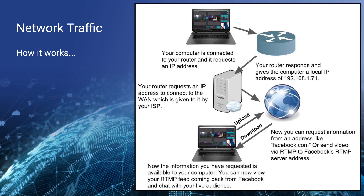All computers on your local area network are likely connected to a router, which gives the computer an IP address — received automatically via DHCP or set manually. Your router responds to the computer when it requests information through IP, the internet protocol we use to communicate, and it can communicate to the wide area network. Your computer can send and receive information on the local area network inside your firewall, and that's how NDI generally works. When your computer wants to stream to Facebook, that's done through the router to the wide area network.